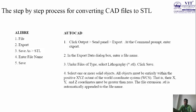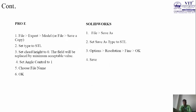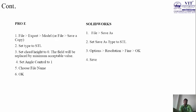The file extension .STL is automatically appended to the file name. For ProE: go to File > Export > Model, or File > Save a Copy, then set Type to STL. The reason to use Save a Copy is that while converting to STL format it may not convert properly or may hang, because the file size is much larger compared to binary. So it is better to save it as a copy. Set chord height to 0 — the field will be replaced by the minimum acceptable value. Set angle control to 1. Choose the file name and click OK. This is all about ProE.